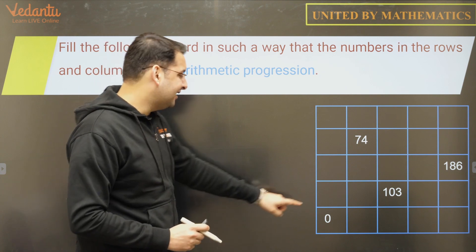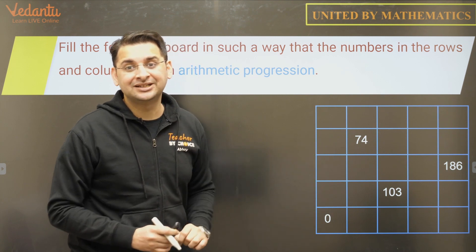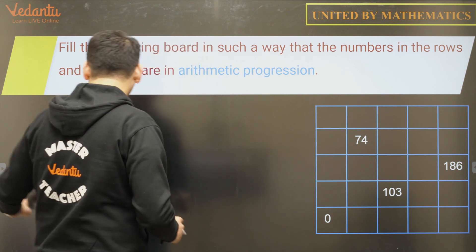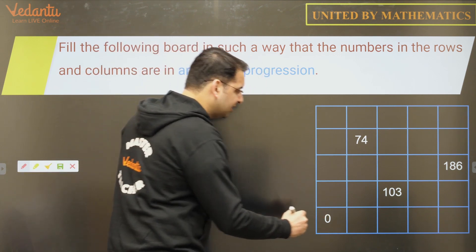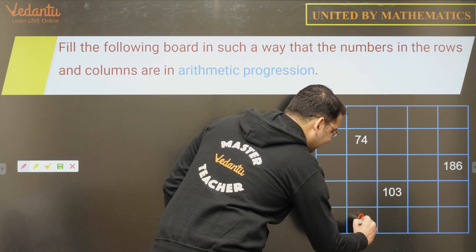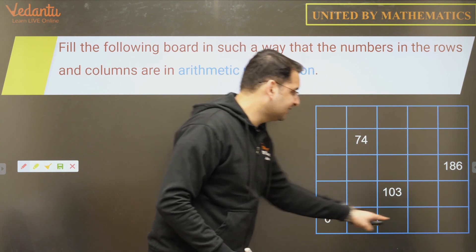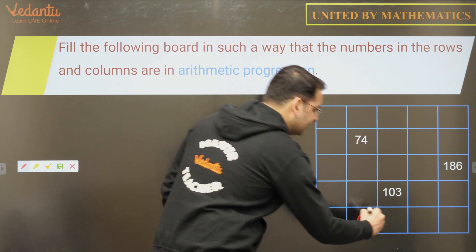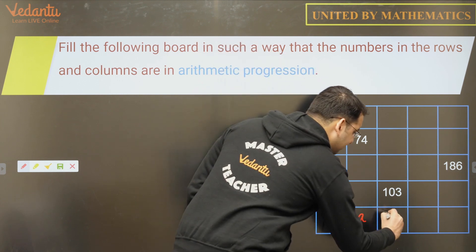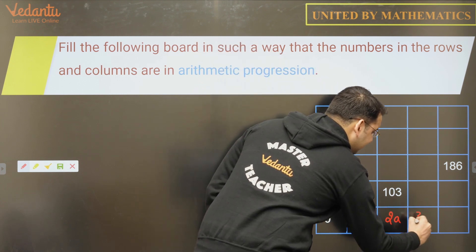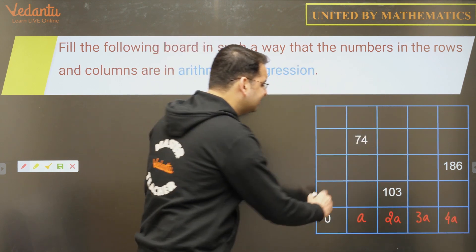So how do we do this? The fact that zero is there in one of the rows and columns will help us in a big way. Since zero is present, let us assume this number as 'a'. Since this is 'a', I can fill up all the other boxes in terms of 'a' — so this will be 2a, this will be 3a, and this will be 4a.